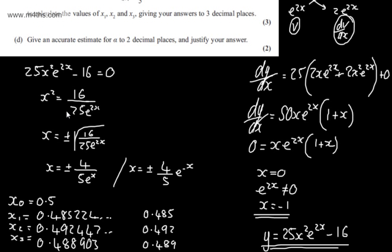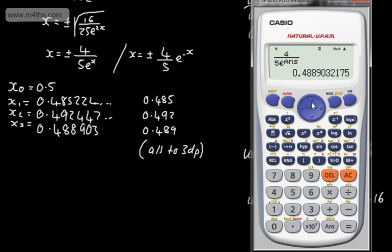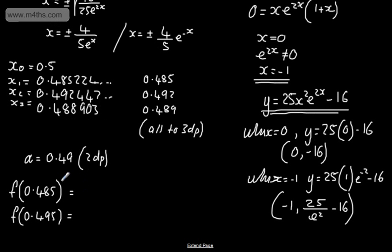In part D for two marks, it says give an accurate estimate for alpha to two decimal places and justify your answer. If we continue with this iteration formula, we will see that this is going to settle. What we want to show is alpha equals 0.49 to two decimal places. Let's do f(0.485), which is the lower bound, and f(0.495), which is the upper bound. We want to show a change of sign in the interval, therefore the root alpha will be 0.49 to two decimal places.